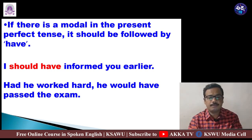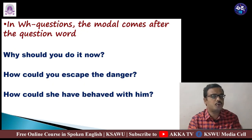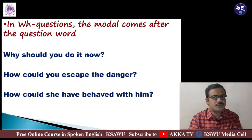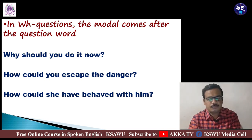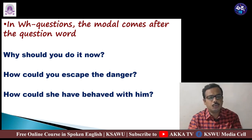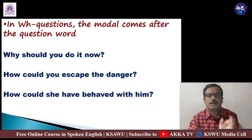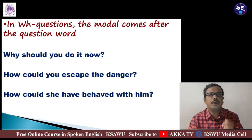In WH questions, the modal comes after the question word. For example: 'Why should you do it now?' — 'why' is the question word, 'should' is the modal auxiliary, then comes the subject 'you.' 'How could you escape the danger?' — 'how' is the WH word, 'could' is the modal. So in WH questions, the question word comes first, followed immediately by the modal auxiliary.